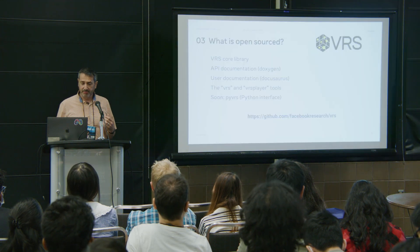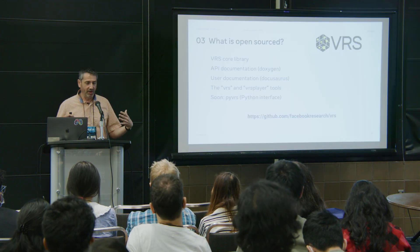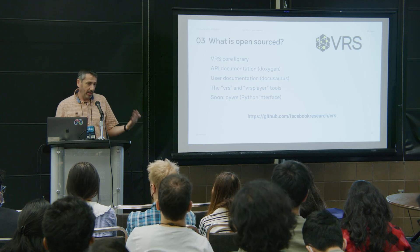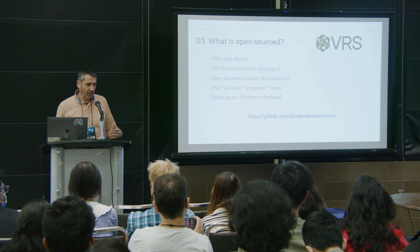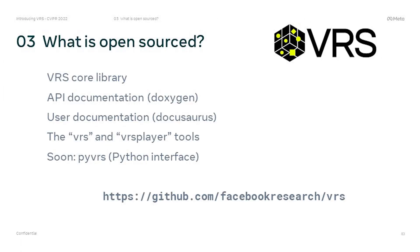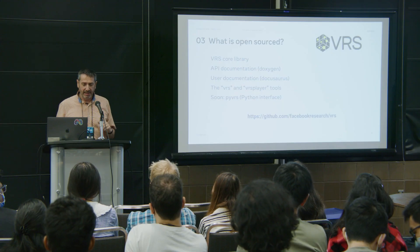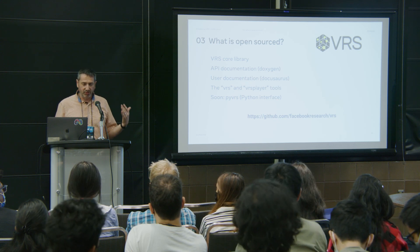So what is open source? We open source the core VRS library with API documentation and user documentation that explains the philosophy behind the API. We open source a set of tools that I'll discuss briefly afterwards. And soon we will publish the PyVRS API that allows you to read and write VRS files directly from Python. This is a bit different from what Pierre was telling you about — this is really about the open source VRS library. It's available on GitHub under facebook-research/VRS.